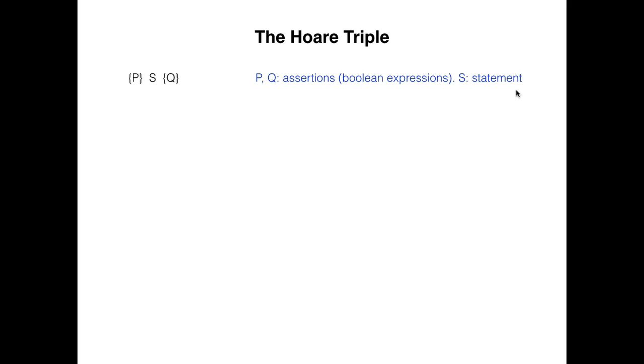In 1969, Sir Tony Hoare introduced the following notation, now called a Hoare triple, where p, the precondition, and q, the postcondition, are assertions, and s is a statement, or a sequence of statements. I said Sir Tony Hoare because Tony was knighted by the Queen of England for his many contributions to computer science and especially to his work on correctness of programs.